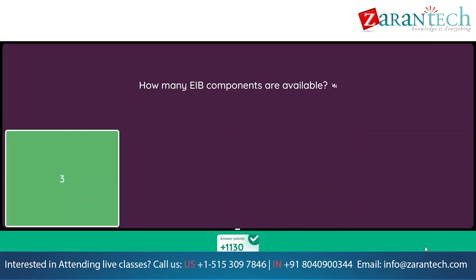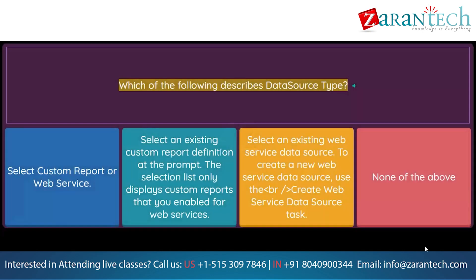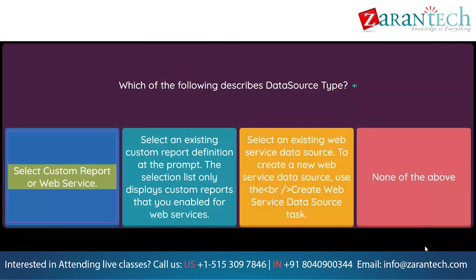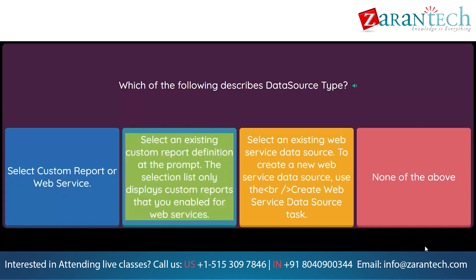Which of the following describes data source type? Option 1: Select custom report or web service. Option 2: Select an existing custom report definition at the prompt — the selection list only displays custom reports enabled for web services. Option 3: Select an existing web service data source; to create a new one, use the Create Web Service Data Source task. Option 4: None of the above.